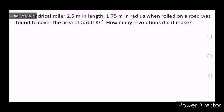A cylindrical roller, 2.5 meters in length, 1.75 meters in radius, when rolled on a road, was found to cover the area of 5,500 meters squared. How many revolutions did it make? This problem is interesting because we are asked to find the number of revolutions of the roller.